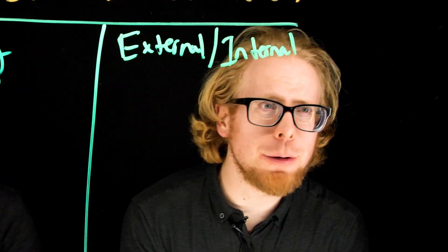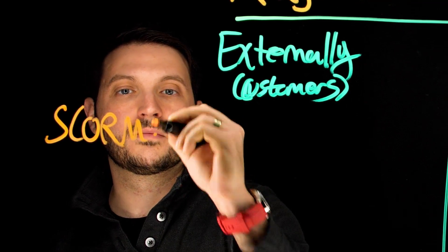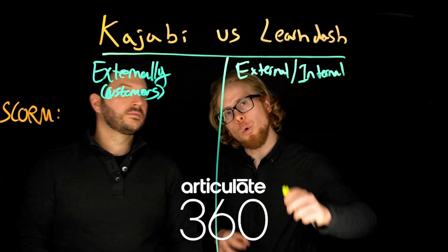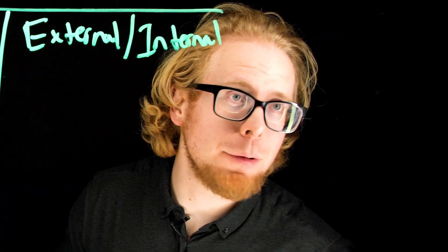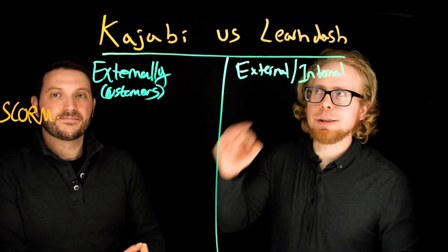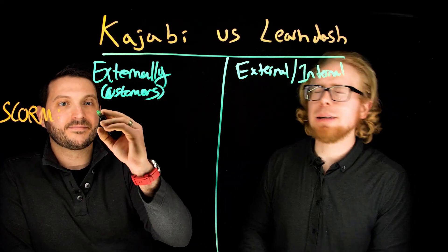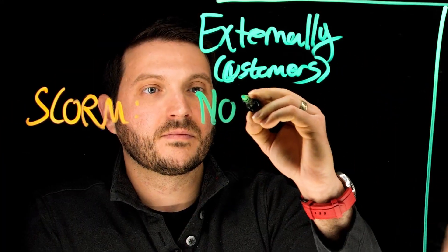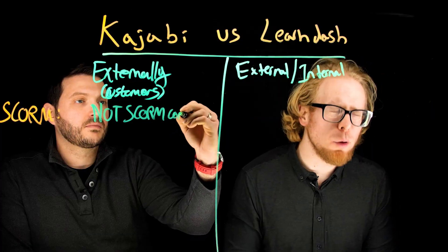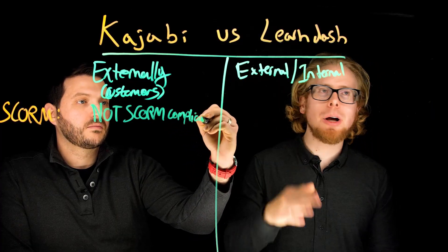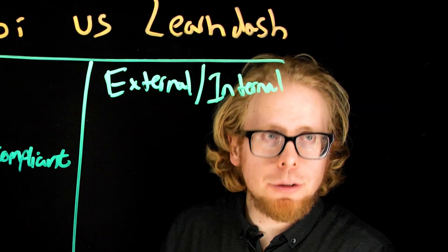The next piece we want to look at is SCORM compliance, because for those of you building online courses using authoring tools like anything in the Articulate 360 suite or Adobe Captivate, you are going to need a SCORM-compliant LMS. Kajabi is not SCORM compliant — this is probably one of the main deterrents people should have when looking at Kajabi.